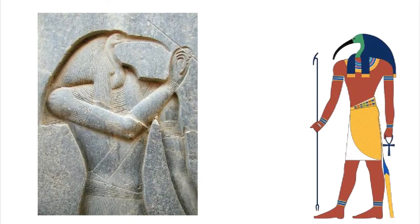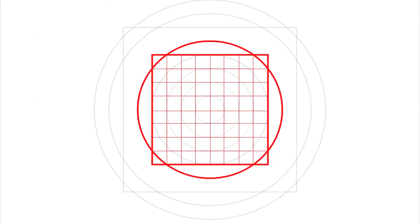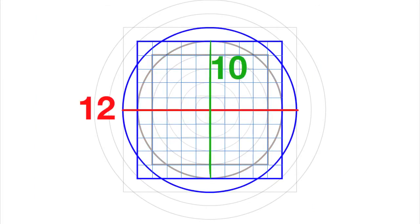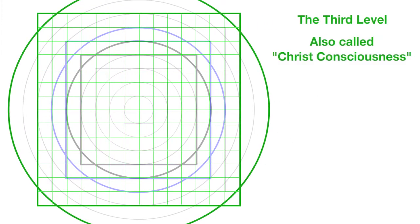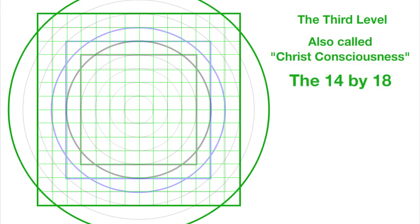According to Thoth, an ascended master who has provided much of this information with us, the first level is the first time self-aware consciousness began. The second level has 10 squares across the large square, and a 12 radii circle, so we'll call it a 10x12. This is where we are now. This level is the third level, which is also called Christ Consciousness. It is a 14x18.